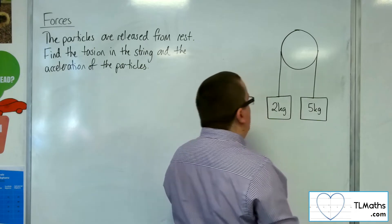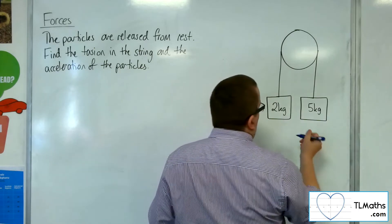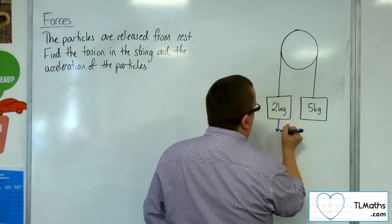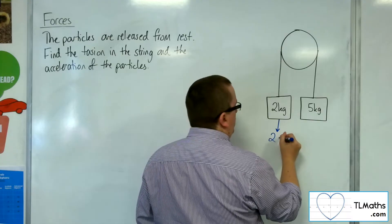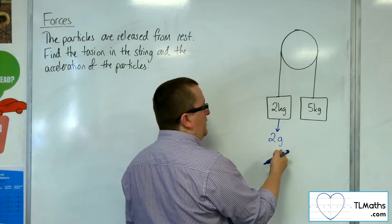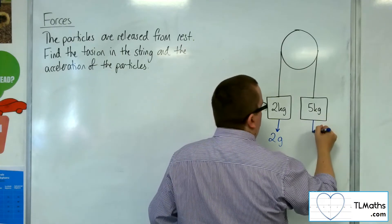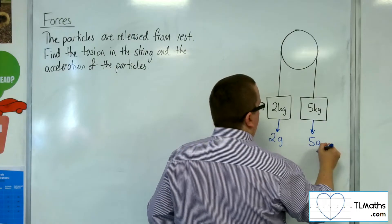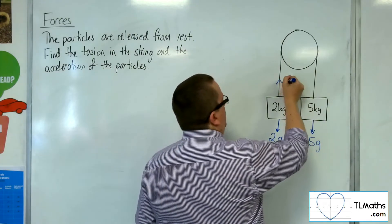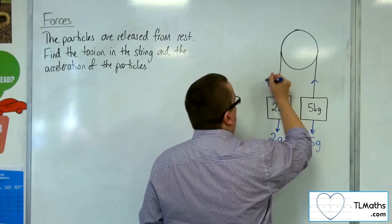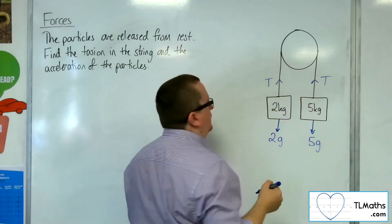So let's add to this diagram. We've got the weight of the two particles, so we've got 2 times g, mass times gravity, and we've got 5g for this particle. We've got the tension in the string, which is going to be working both upwards in this case.